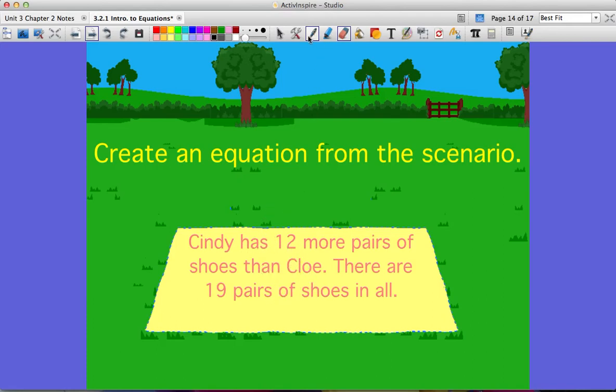But because we're not just looking for the answer, we're looking to set up an equation. We have to look for those key words. And I know that because Cindy has 12 more pairs of shoes than Chloe, and I know that there are 19 pairs of shoes in all, that tells me that whatever Chloe has, which I don't know, so I'm going to use C for Chloe,